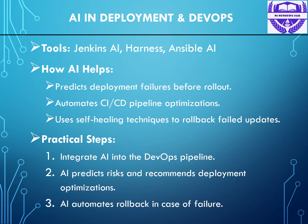Deployment and monitoring are critical for ensuring your software runs smoothly, and AI can help here too. AI optimizes CI/CD pipelines, making deployment more reliable and efficient. Jenkins AI and Harness predict deployment failures before they occur, ensuring smooth rollouts. AI-driven automation enhances infrastructure provisioning and self-healing systems. By leveraging AI in DevOps, organizations minimize downtime and improve software reliability.